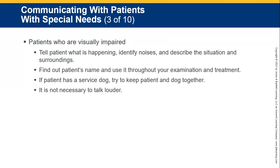For patients who are visually impaired: tell the patient what's happening and try to identify any noises that may confuse or upset them. Describe the situation and surroundings, and tell them step by step what's happening. It's more important than ever to speak to the patient, as they are confused and don't know what's going on — we need to calm them down and constantly tell them what we're doing. If they have a service dog, try to keep the dog and patient together. Familiar surroundings and familiar things help the patient relax. It is not necessary to talk louder to a visually impaired patient — they are not deaf, they cannot see.